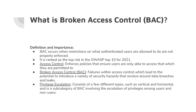Access control enforces policies that ensure users are only able to access what they are permitted to. This is typically done through authentication, which is most of the time just something simple like a username and password. Broken access control is where failures within access control occur, which can lead to the potential to introduce a variety of security hazards that typically revolve around data breaches and leaks.